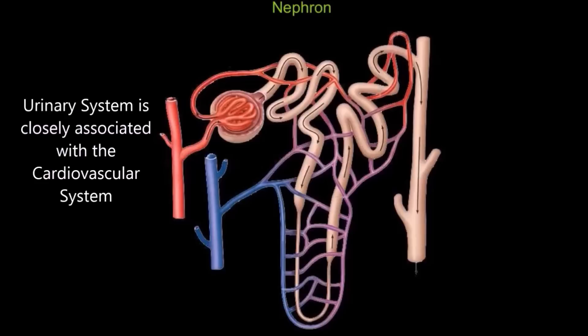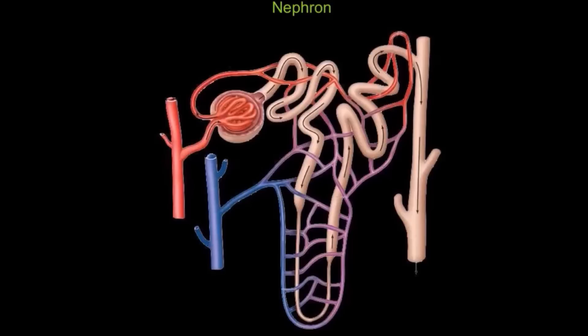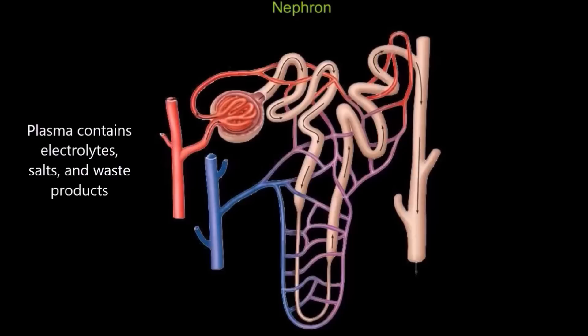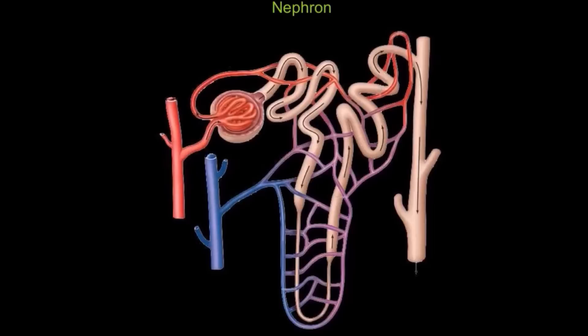The nephron is the functional unit of the kidney that is responsible for the formation of urine. The urinary system is closely associated with the cardiovascular system, since the cardiovascular system contains blood, and blood has the plasma which contains the electrolytes, the salts, and any waste products that the body wants to get rid of.